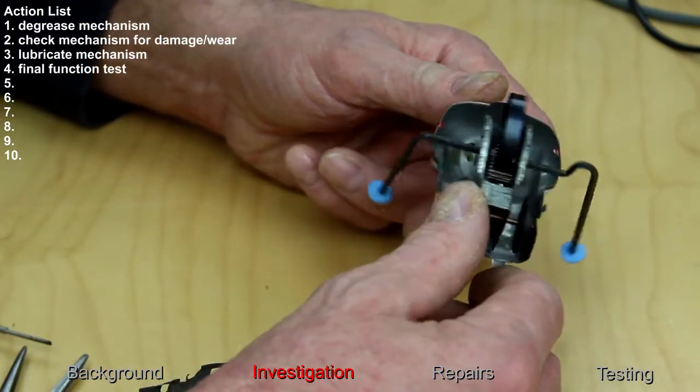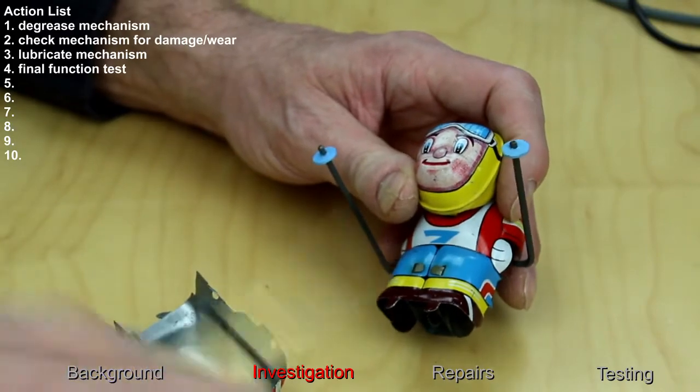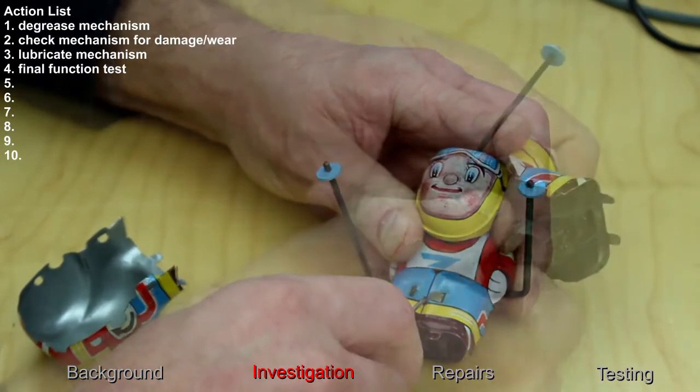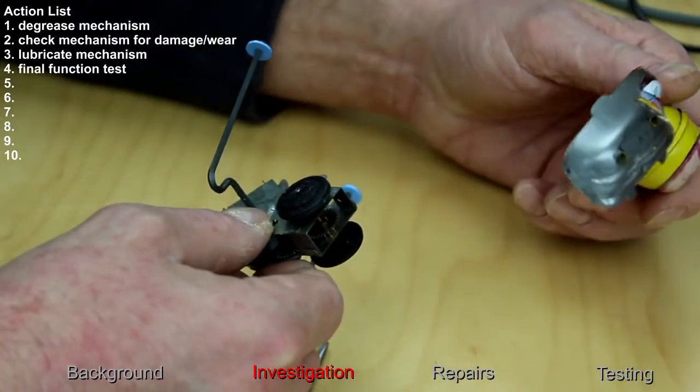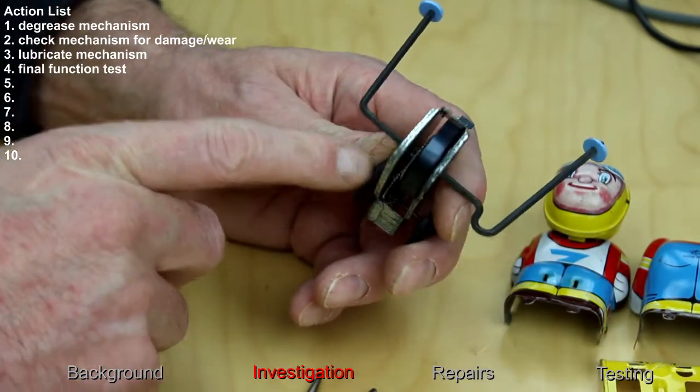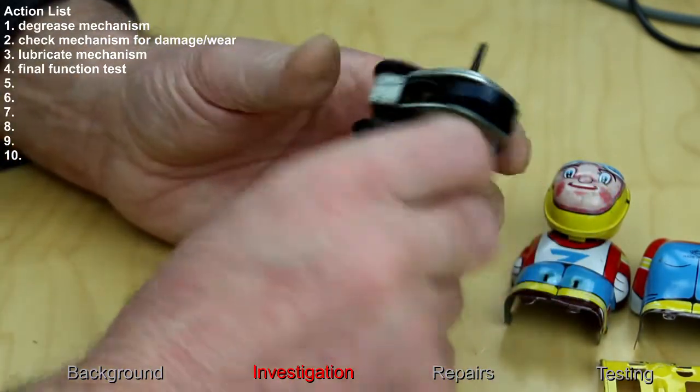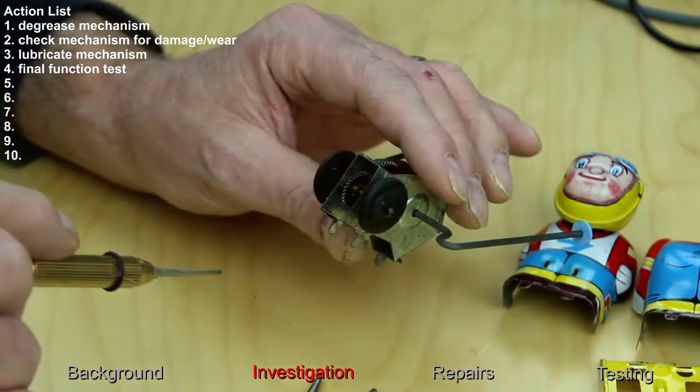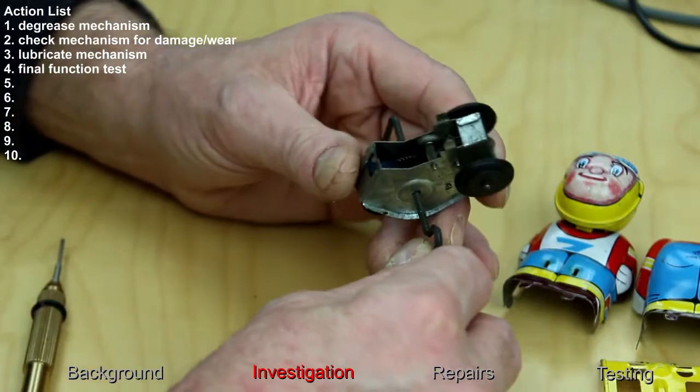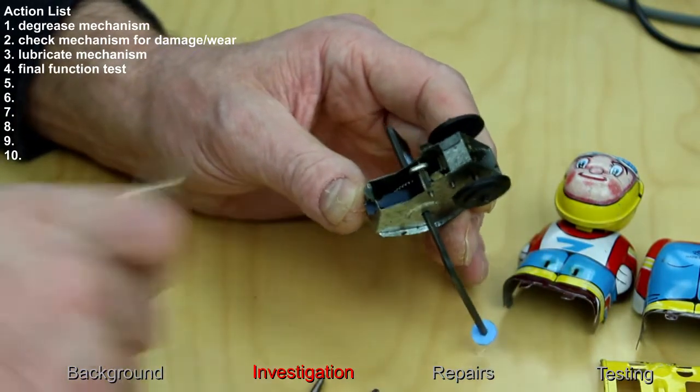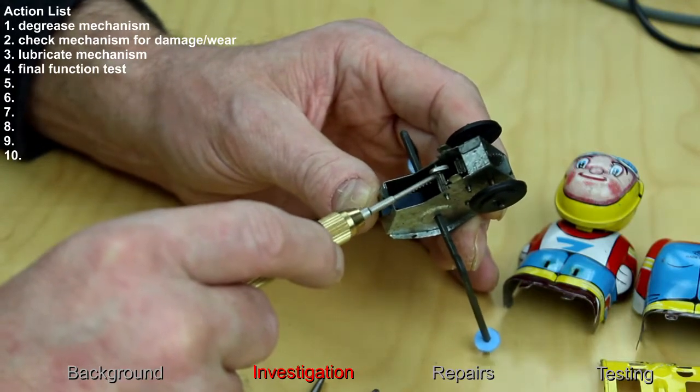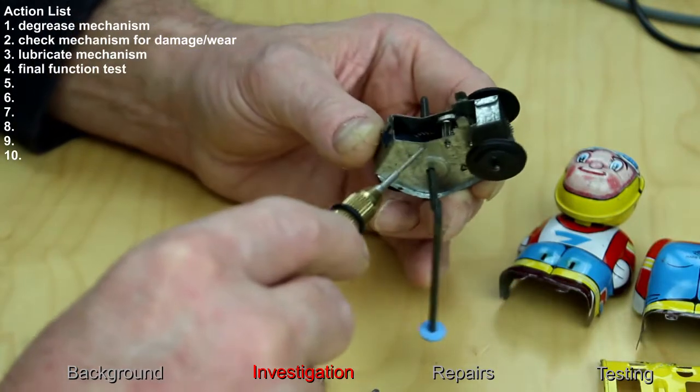Okay, access to the mechanism. I think I can release it completely from the front. Okay, it's just a spring to wind up. So condition-wise, all the gears look in good condition. It's a bit dirty inside. Not too much wear. There's a little bit of wear here and there. But everything seems to be there.